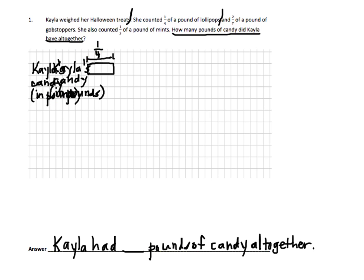And two-sevenths of a pound of gobstoppers. From here to here is two-sevenths of a pound of gobstoppers. Stop — I took care of that piece of information. And then she also counted one-third of a pound of mints. Stop. She counted one-third of a pound of mints. I didn't label these — this is lollipops, this is gobstoppers, and this is for the mints.